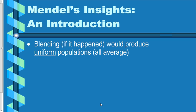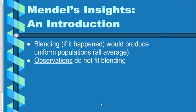If blending were the only method of inheritance, we would all be pretty similar to each other. Within every species, everyone would be about the same, and there'd be no evolution. Not only does this not make sense in terms of variation, but observations simply show us this isn't true. It's one of these weird cases where scientists were teaching something they could very easily go outside and observe the world to find out wasn't true.